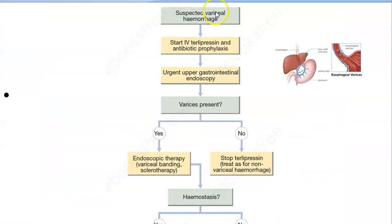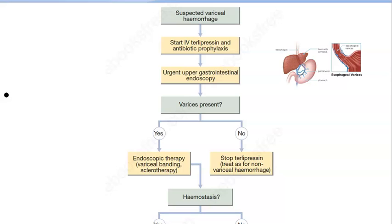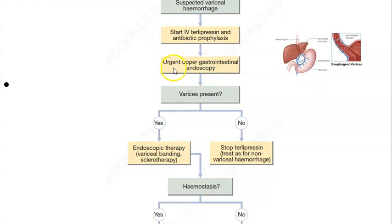Looking at the flowchart: if there is variceal hemorrhage, you give terlipressin, which is a synthetic vasopressin analog. What it does is reduce portal blood flow and intrahepatic resistance, thereby bringing down the portal pressure. That is what you want — reduced portal pressure. Terlipressin is the key drug to write in the exam.